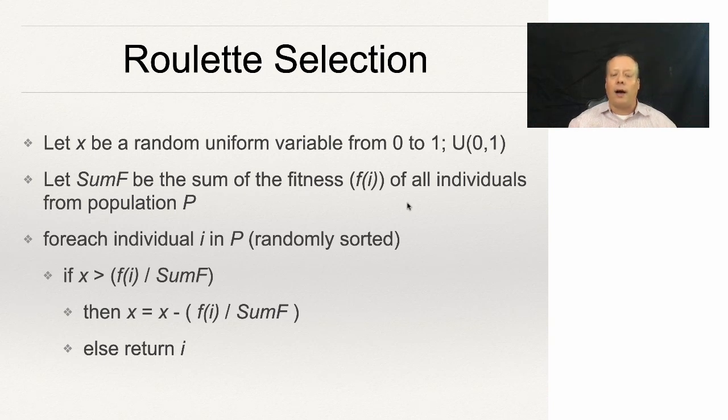Then X equals X minus f(i), so we subtract off some of the sum. Otherwise, we're going to return i. In other words, essentially we're picking a spot in that wheel to stop on, and we're just going through each individual. If they're less than that spot, we're getting rid of them, and then whatever individual we end up on, that's the individual we propagate into the next generation.